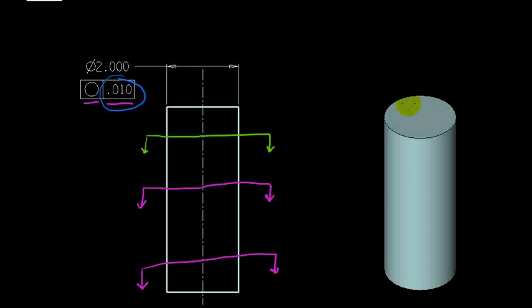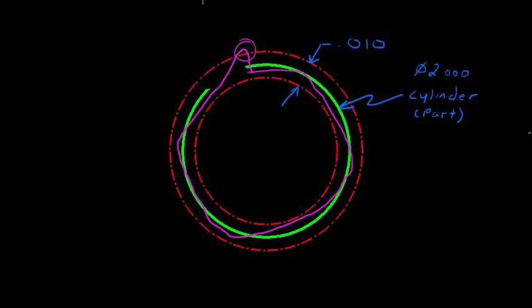And again, that tolerance is independent of the size. The size is applied separately, but when we're looking at roundness specifically, we are looking at each individual slice of this cylinder and examining the resulting section, or circular cross section, to ensure that it fits within this 10 thousandths of an inch tolerance band.